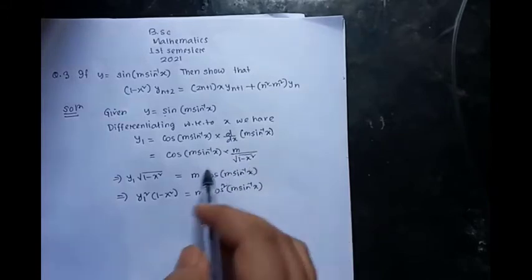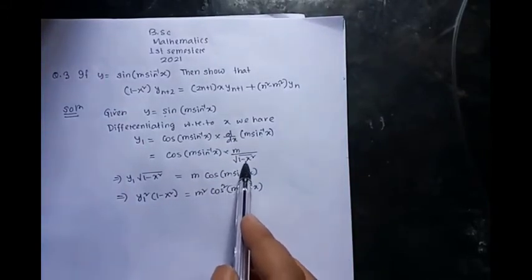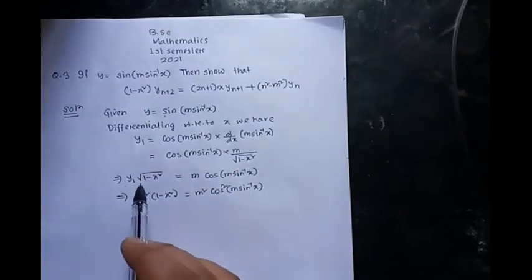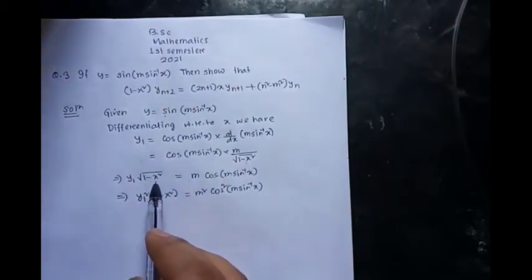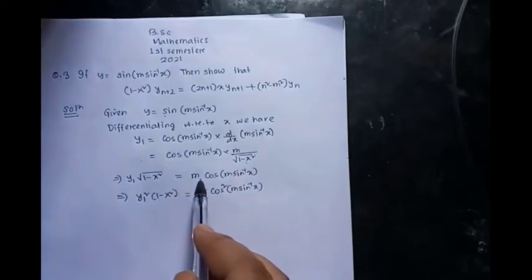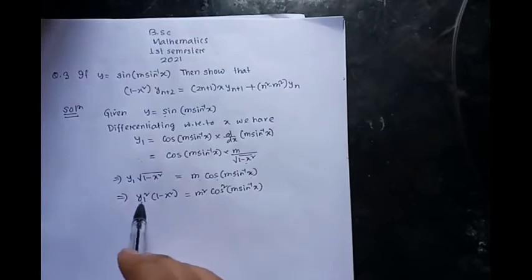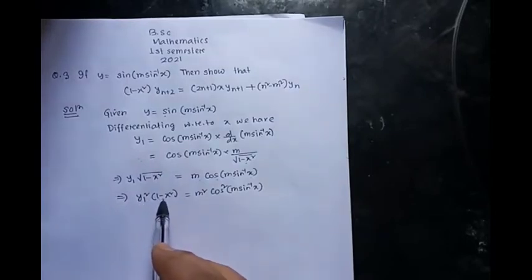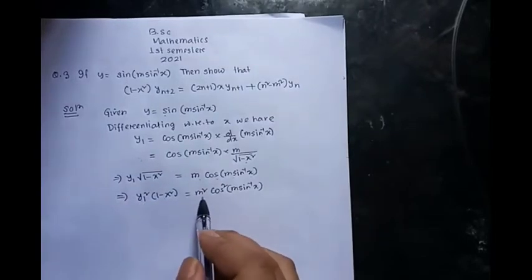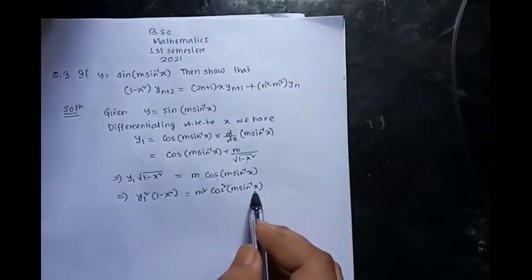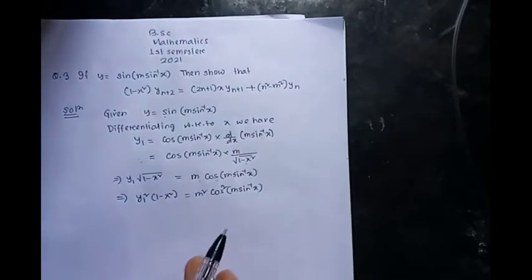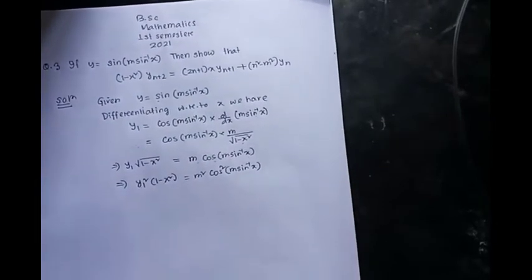Shifting the root term to the left hand side, we have y₁ times root of (1 minus x squared) equal to m times cosine of m·sine inverse x. Now squaring both sides, we have y₁ squared times (1 minus x squared) equal to m squared times cosine squared of m·sine inverse x.